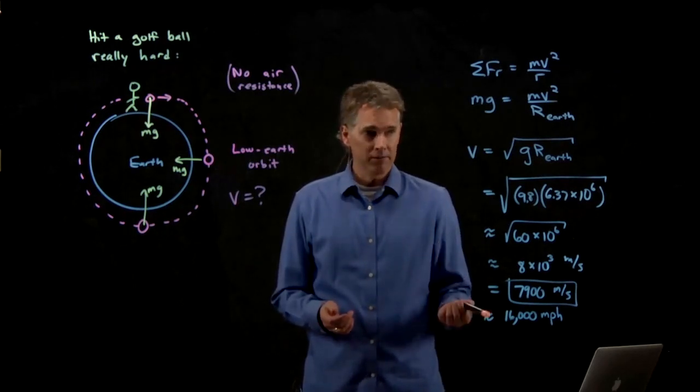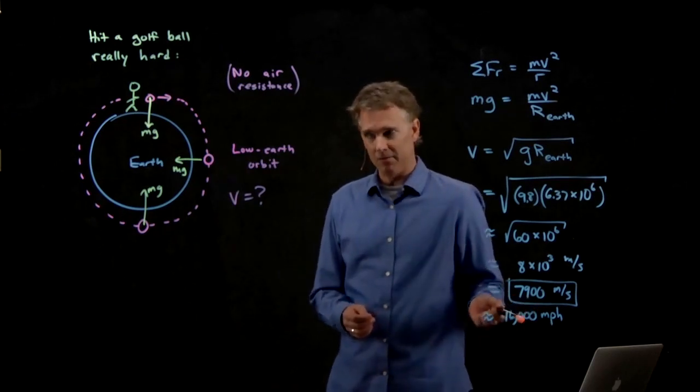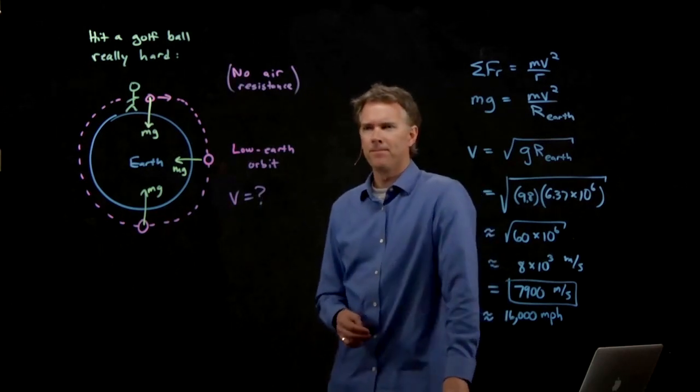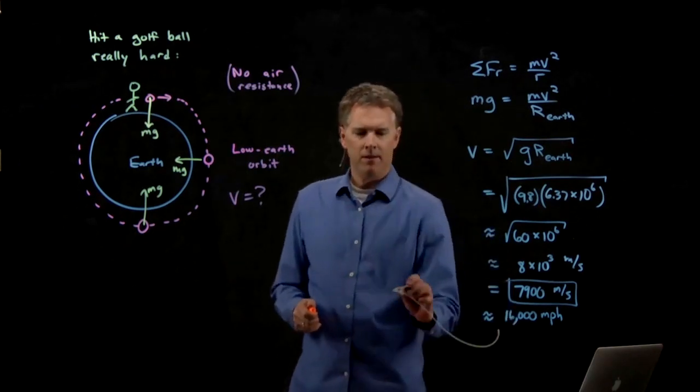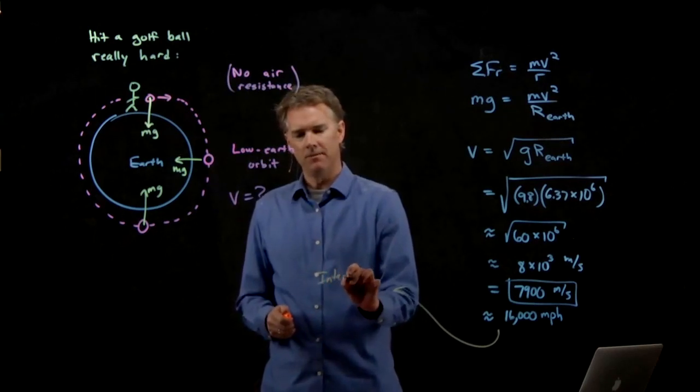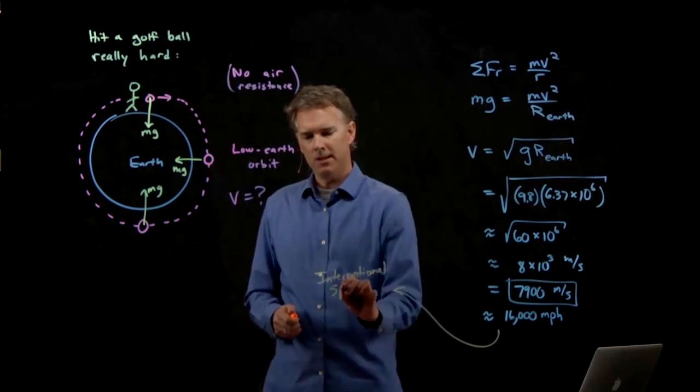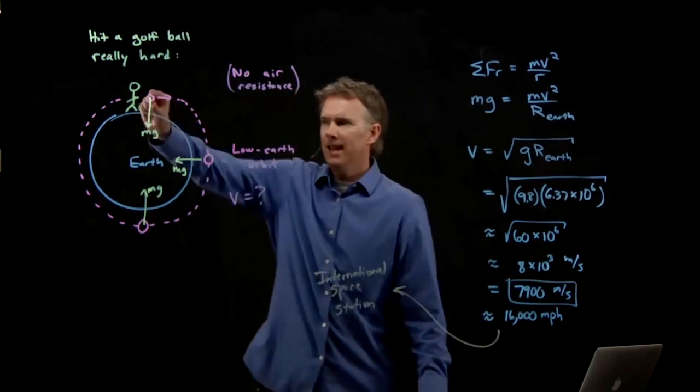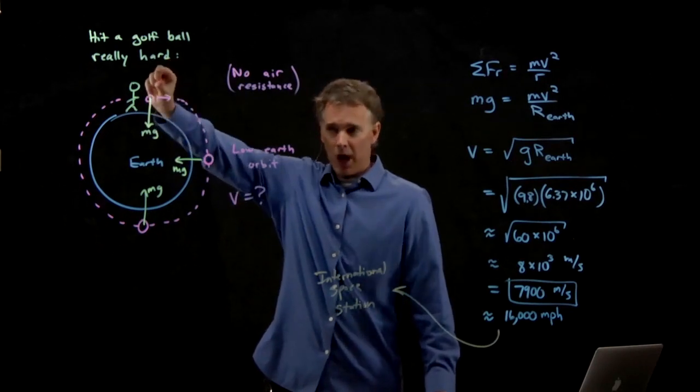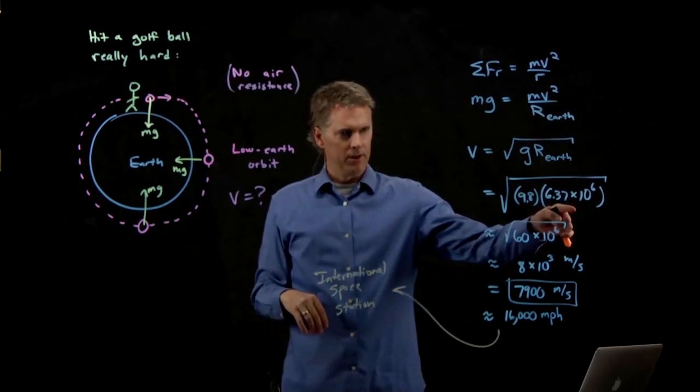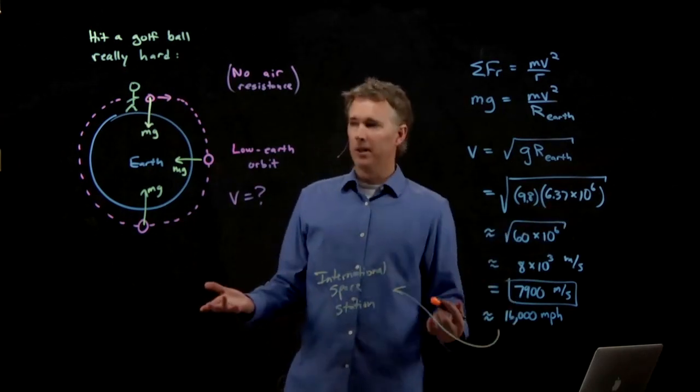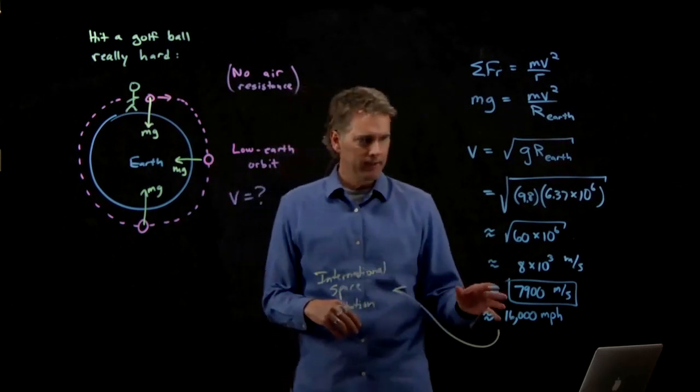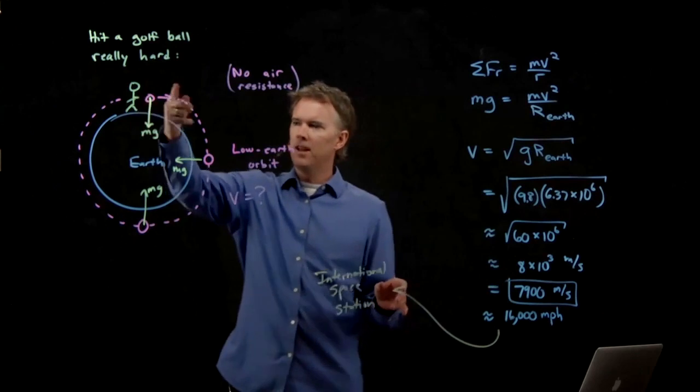Can we as humans get anything to move at 16,000 miles per hour? The answer, of course, is yes. We have something right now that is moving at 16,000 miles per hour or even a little bit faster. What is it? It is the International Space Station. Remember how we talked about Scott Kelly that just came off the International Space Station? The International Space Station is higher than this golf ball, but it's not that much higher in comparison to the radius of the earth. And so this speed is approximately the speed of the International Space Station.